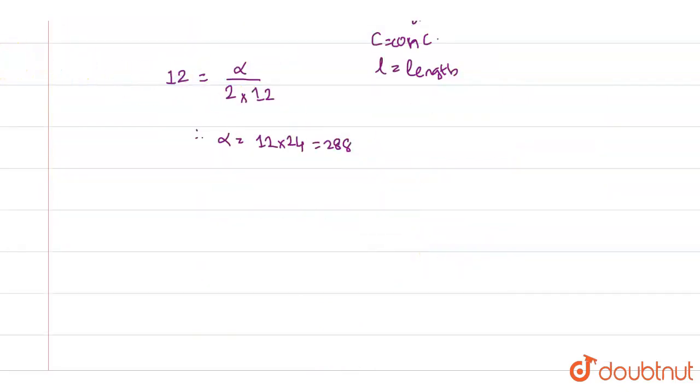Now that we found alpha, we need to find the new specific rotation. Let's call it alpha dash or alpha prime when the other parameters remain the same.